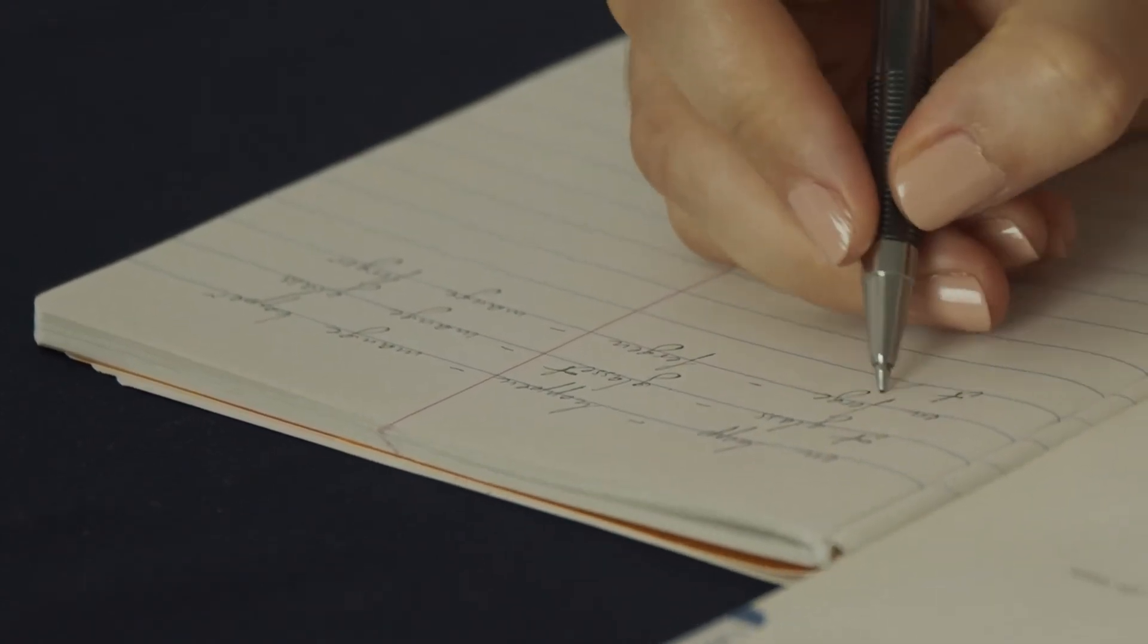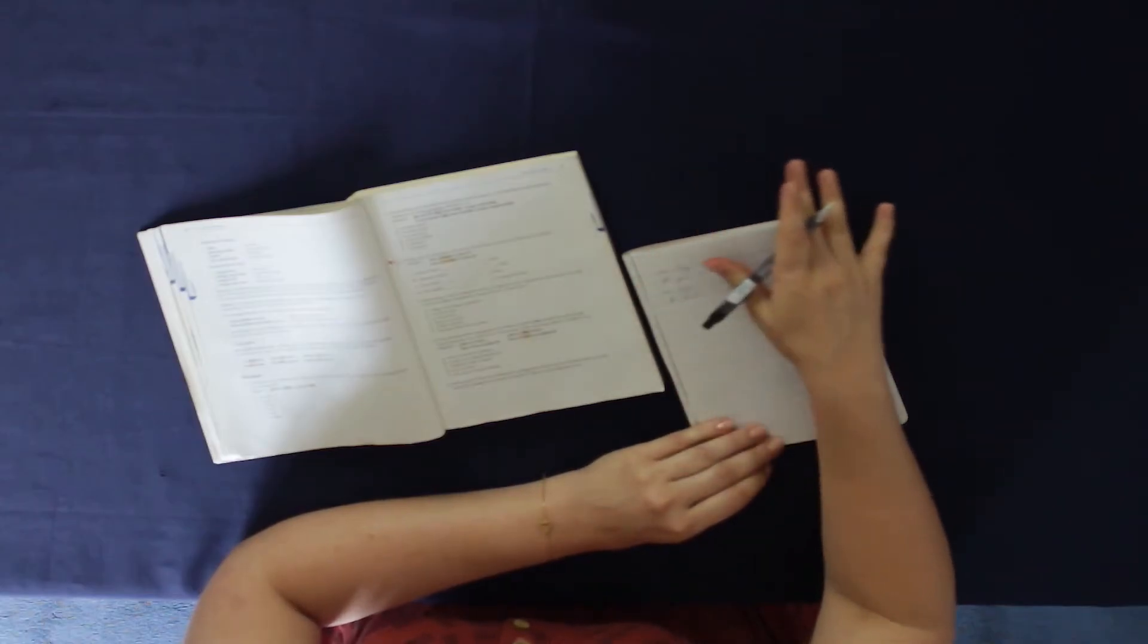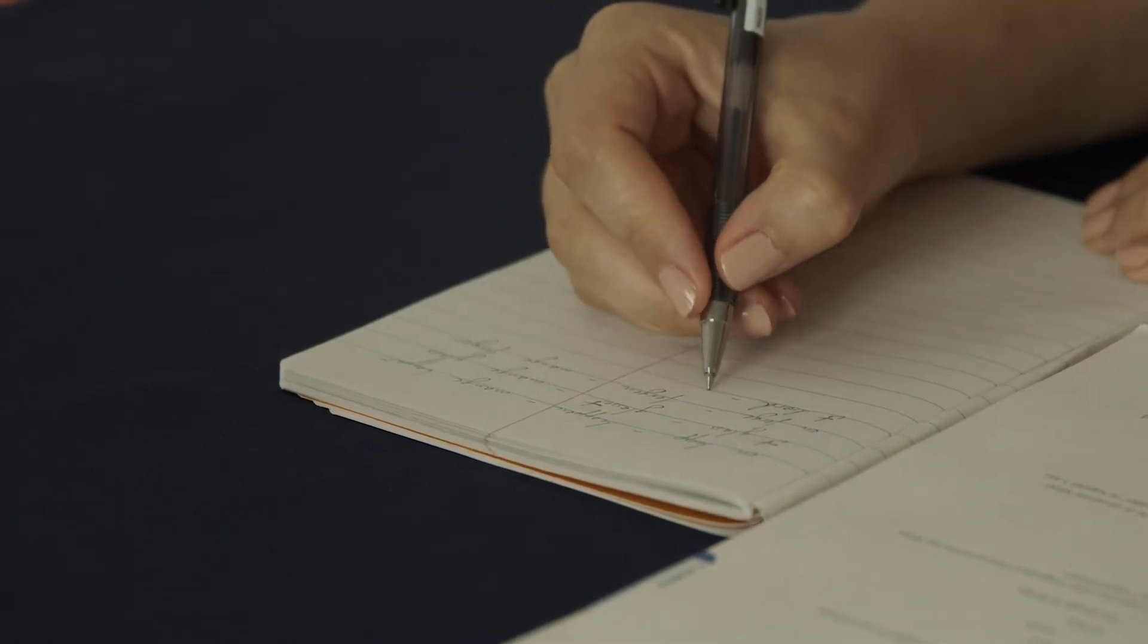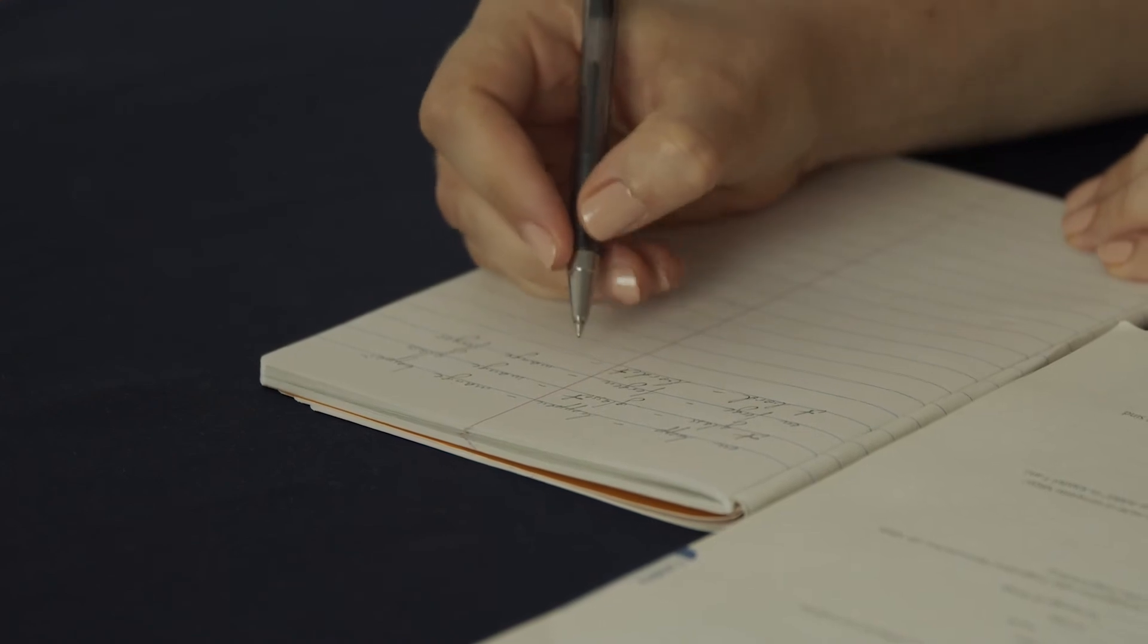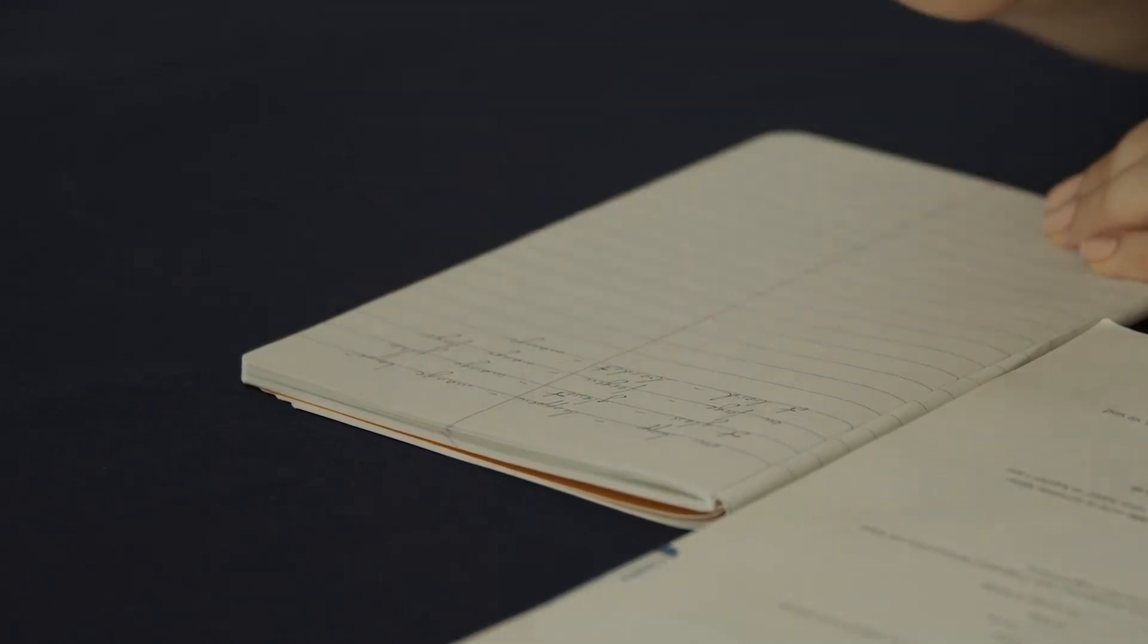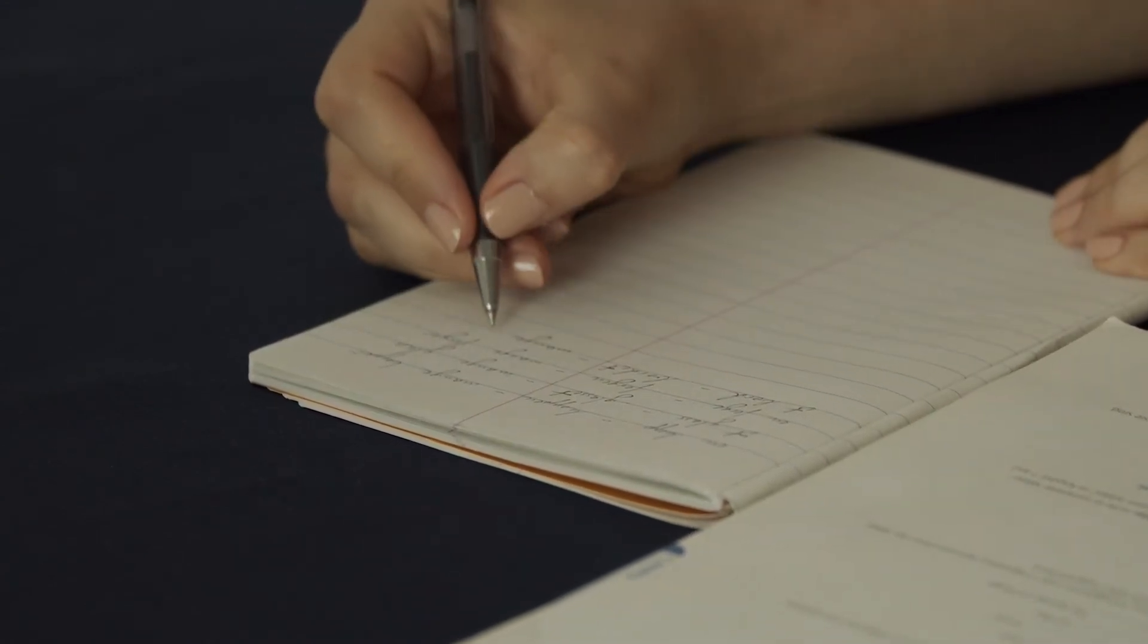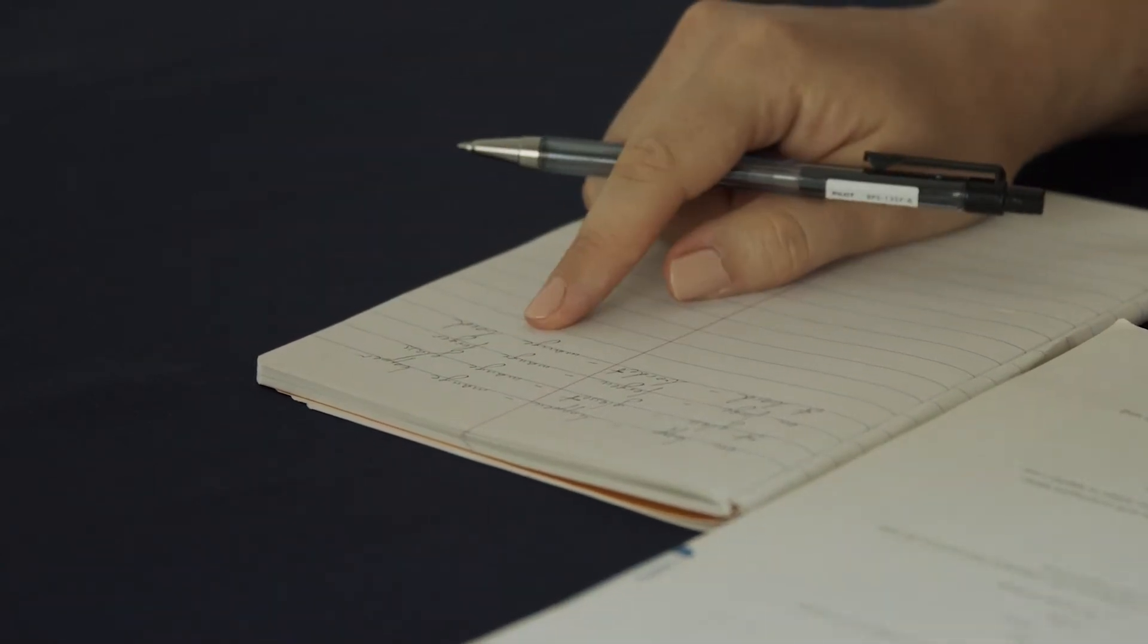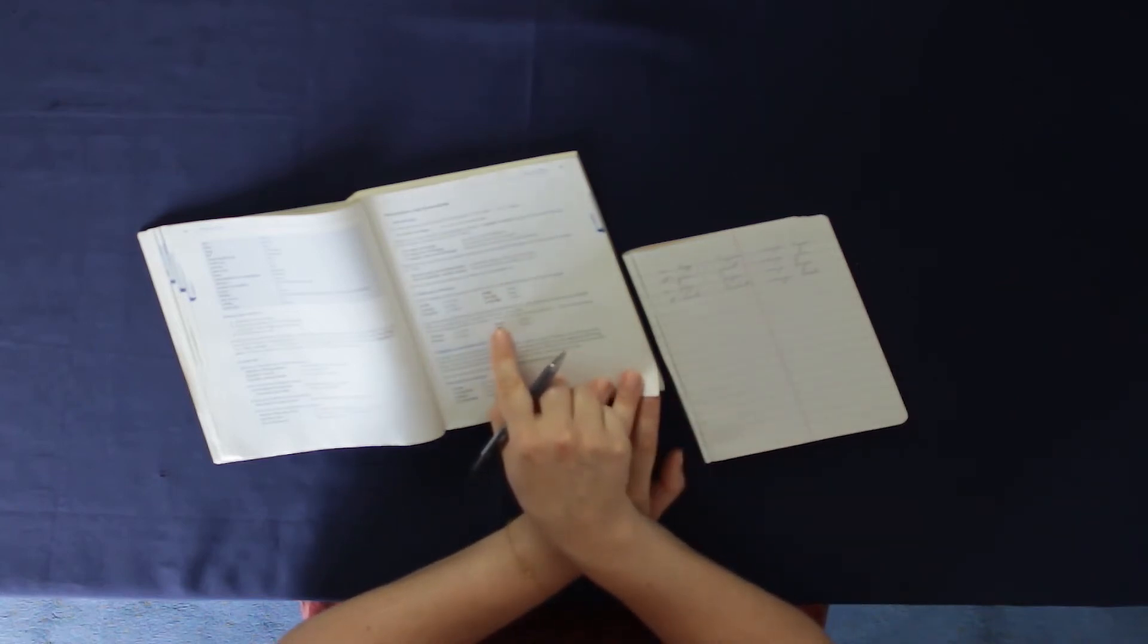Et bord, that's this right here, the table. Bordet, and should you remember this? It's an et-word, so we don't add anything. Mange bord, many tables. We had that here.